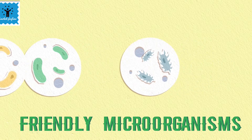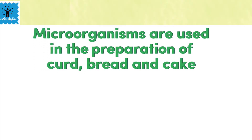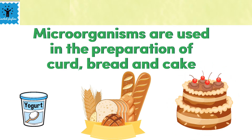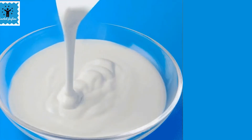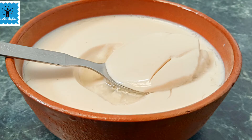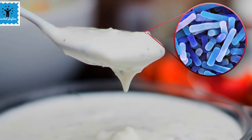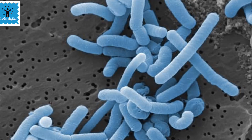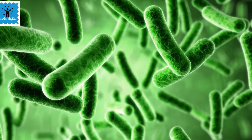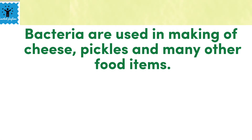Microorganisms are used for various purposes. They are used in the preparation of curd, butter, and cake. Curd contains many microorganisms — there is a bacterium present in curd named Lactobacillus. Lactobacillus helps in the conversion of milk into curd; it multiplies in the milk and converts it into curd.